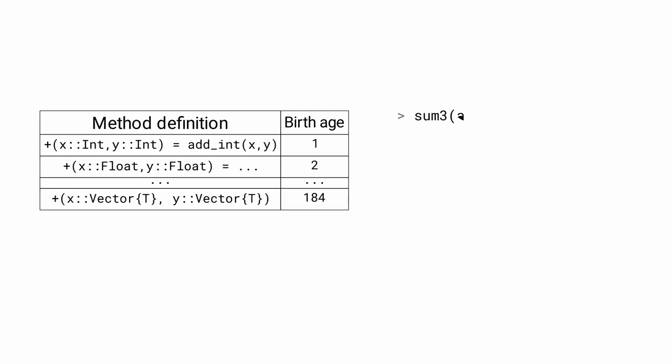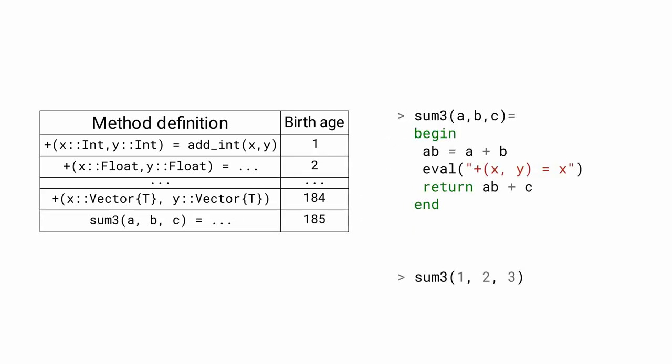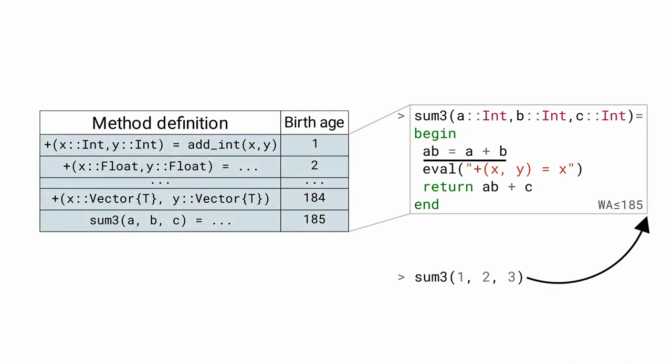In our running example, addition is called twice. When sum3 is called with integer arguments, a plus b is known to dispatch to the built-in integer addition.